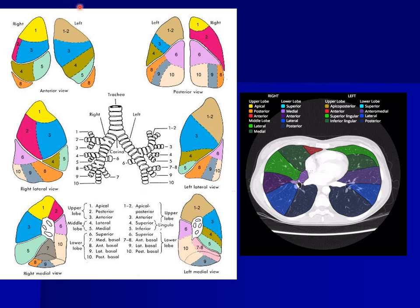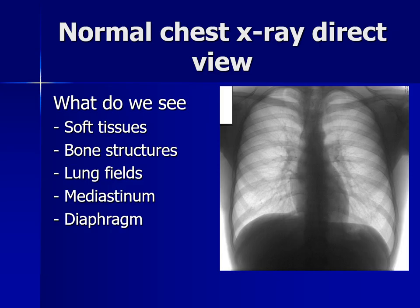Here is the scheme for lung segments — how it looks when we want to describe it on CT, also like a scheme for the doctor working on the CT machine. It helps to understand where the pathological process is located. A normal chest X-ray in direct view shows us soft tissues, muscles, bone structures — ribs, clavicles, vertebrae — lung fields, mediastinum, and diaphragm.